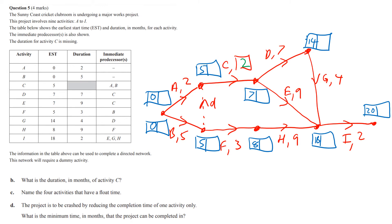Now we do the full critical path analysis — the backward scan. Don't forget the dummy has a value of zero. Going backwards: 20 minus 2 is 18, 18 minus 4 is 14, 14 minus 7 is 7. Then 18 minus 9 is 9, so between 7 and 9 we choose the minimum: 7. Then 7 minus 2 is 5. Going the other way: 18 minus 9 is 9, 9 minus 3 is 6, but also 5 minus 0 is 5, so we choose the minimum: 5. Then 5 minus 5 is 0, and 5 minus 2 is 3.